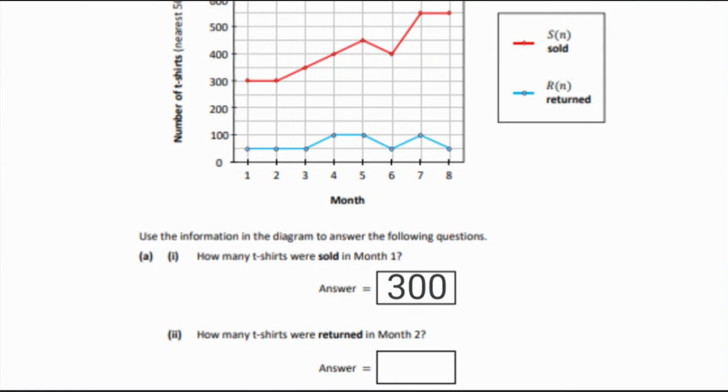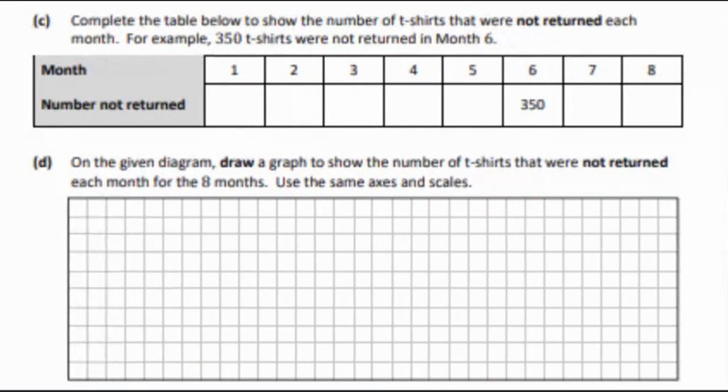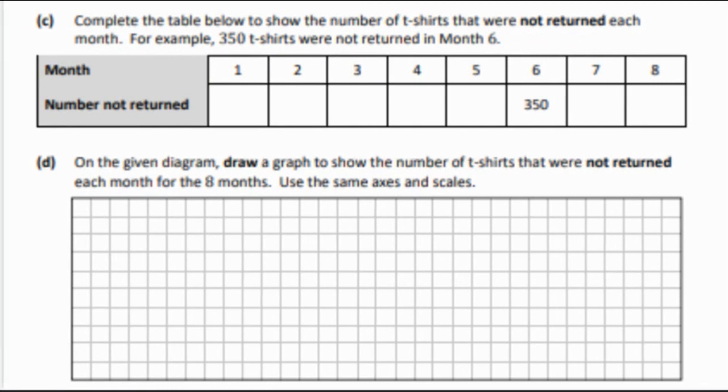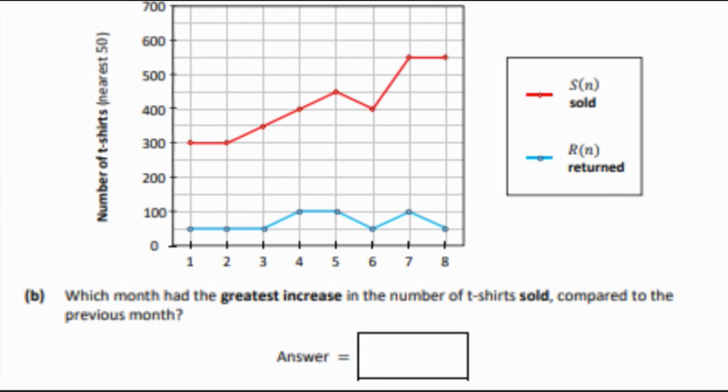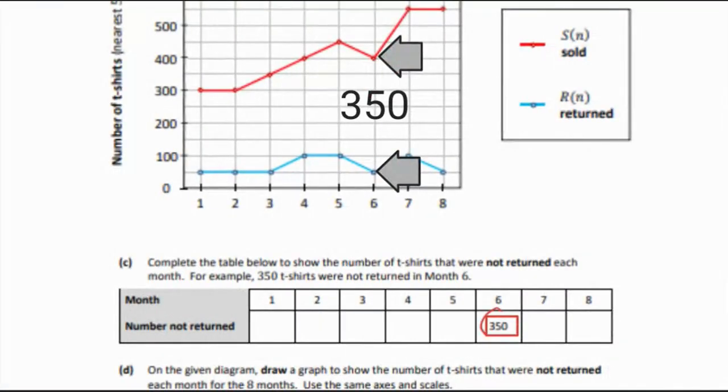Now we're going to fill in this table. The table involves filling in the number which were not returned, so it's the difference between sold and returned. You can see that they give a value of 300 on Month 6, so that's the difference between 400 and 50, which is 350.